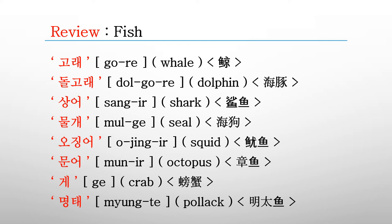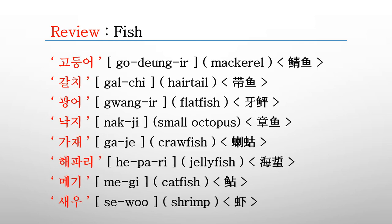The octopus is 문어. The crab is 게. The pollock is 명태. The mackerel is 고등어. The hairtail is 갈치. The flatfish is 광어.